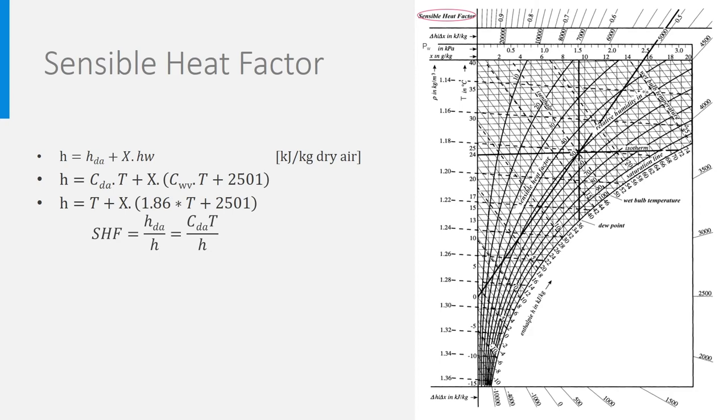The sensible heat factor expresses the ratio of the enthalpy of dry air and the total enthalpy. It is a redundant factor as it can be deduced easily from the enthalpy of dry air at a certain temperature and the total enthalpy. So, by definition, the sensible heat factor SHF is HdA divided by H.